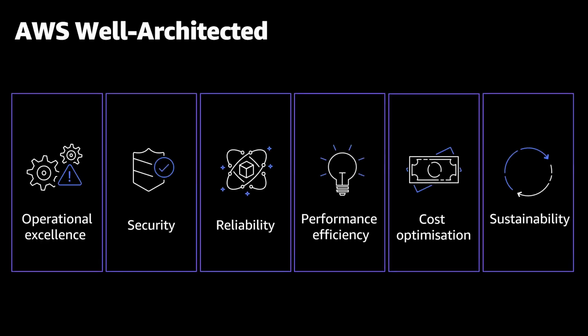There is no security presentation without the AWS well-architected pillars. Creating technology solutions is a lot like constructing a physical building — if the foundation is not solid, it may cause structural problems that undermine the integrity and function of the building. If you neglect the six pillars of well-architected, it can become a challenge to build a system that delivers requirements. Focusing on the security pillar alone, this pillar ensures the ability to protect information and systems to deliver business value through risk assessments and mitigation.